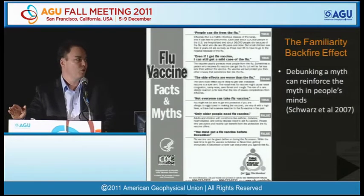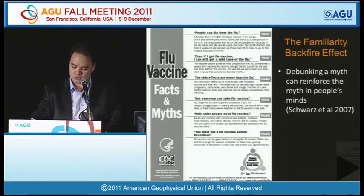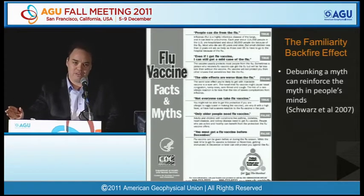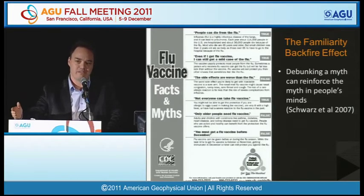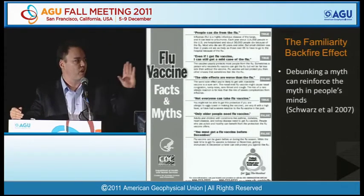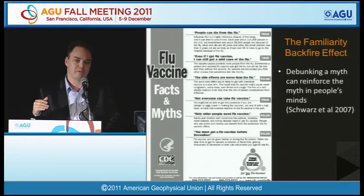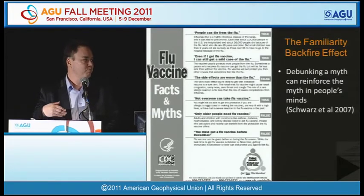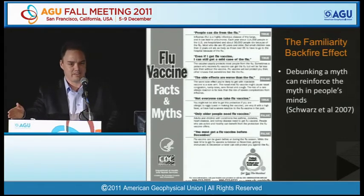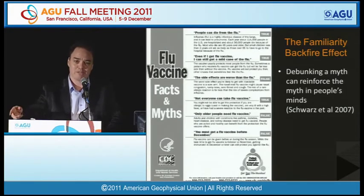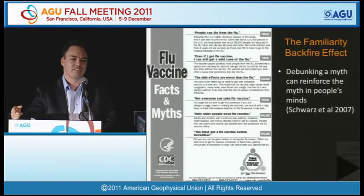I first learned about these backfire effects when I read a paper by Norbert Schwartz that examined exactly what happens when you attempt to refute misinformation. In the experiment, they tested participants' knowledge about vaccine myths to establish their baseline, then showed them a flyer that debunked the most common myths about vaccines. After about half an hour, they tested them again to see whether they could identify myths from facts. The surprising result was that some people actually scored worse after reading the flyer — the debunking actually reinforced the myths in their minds.